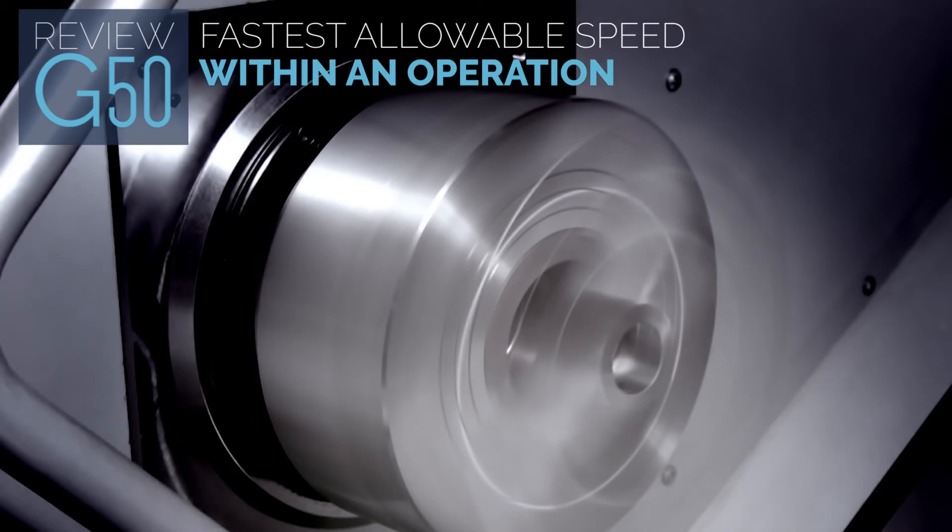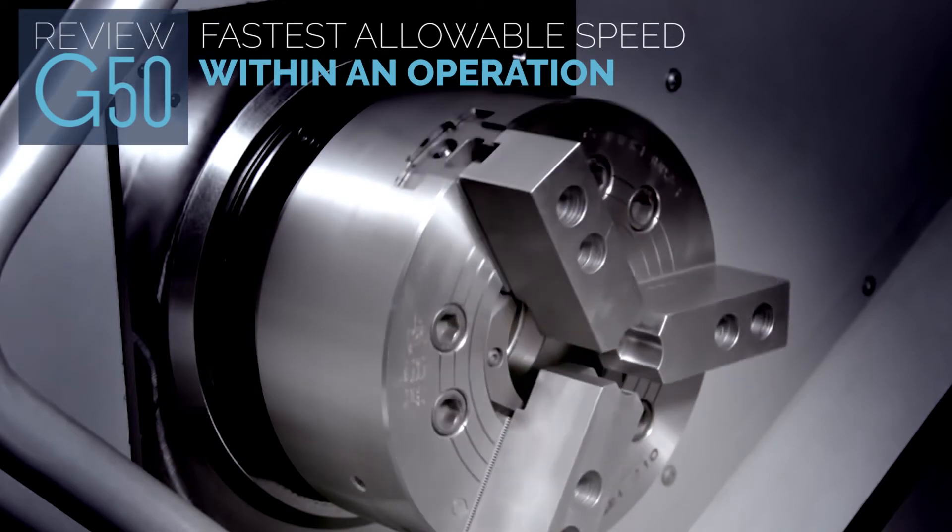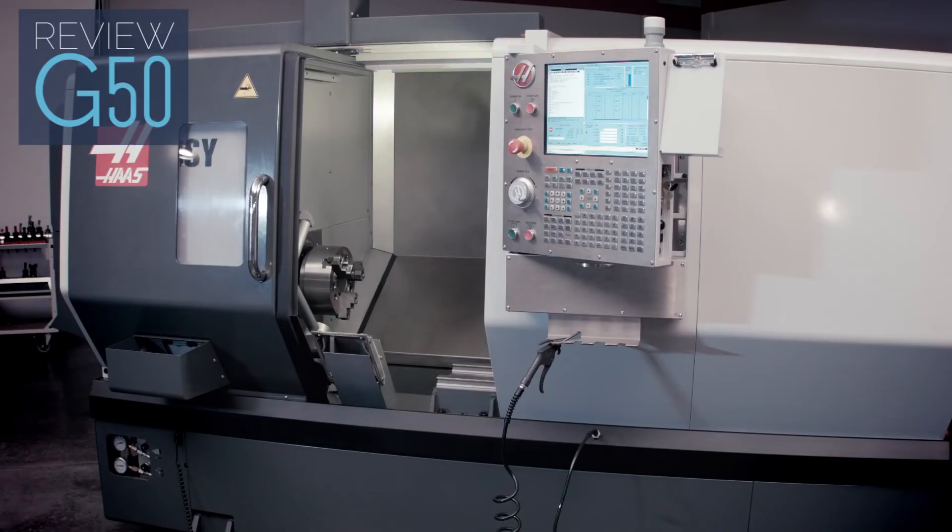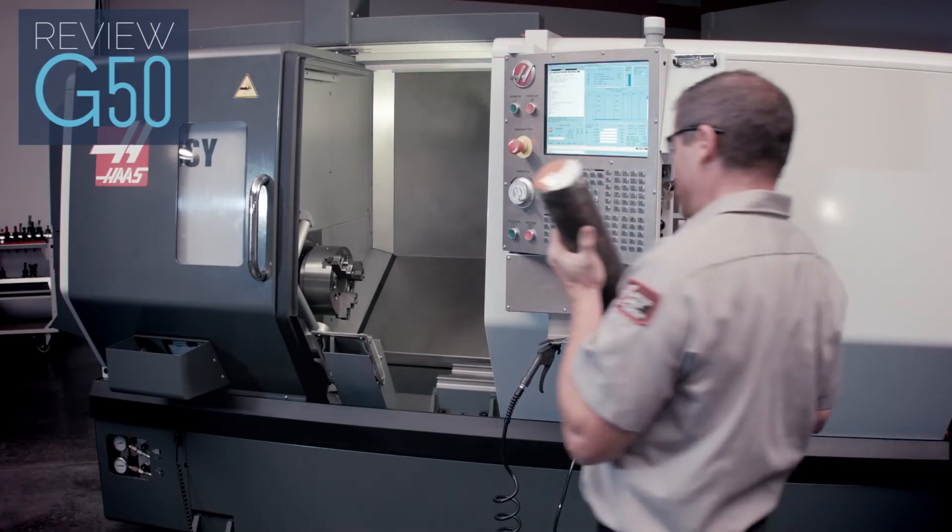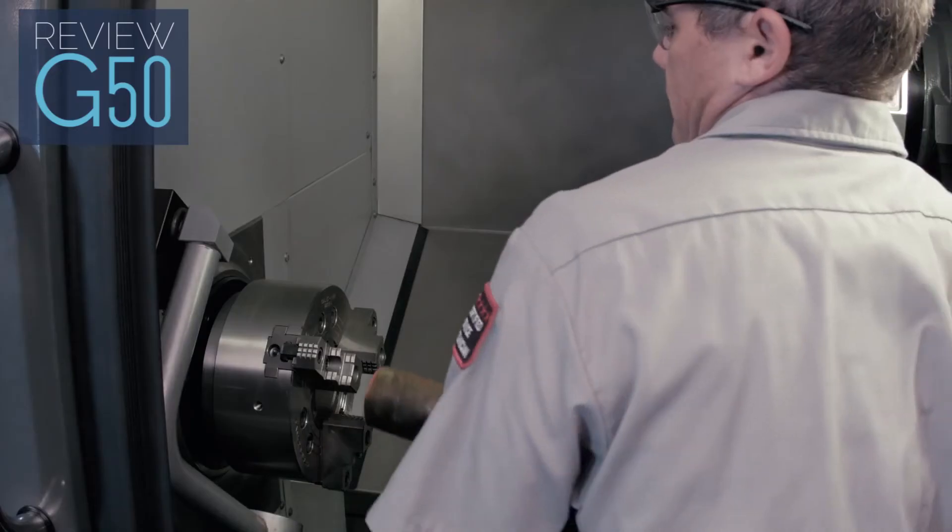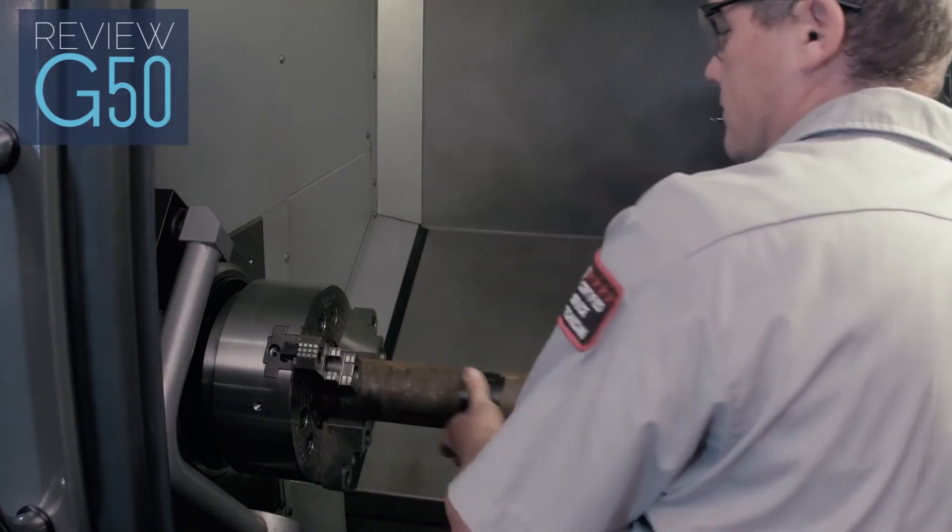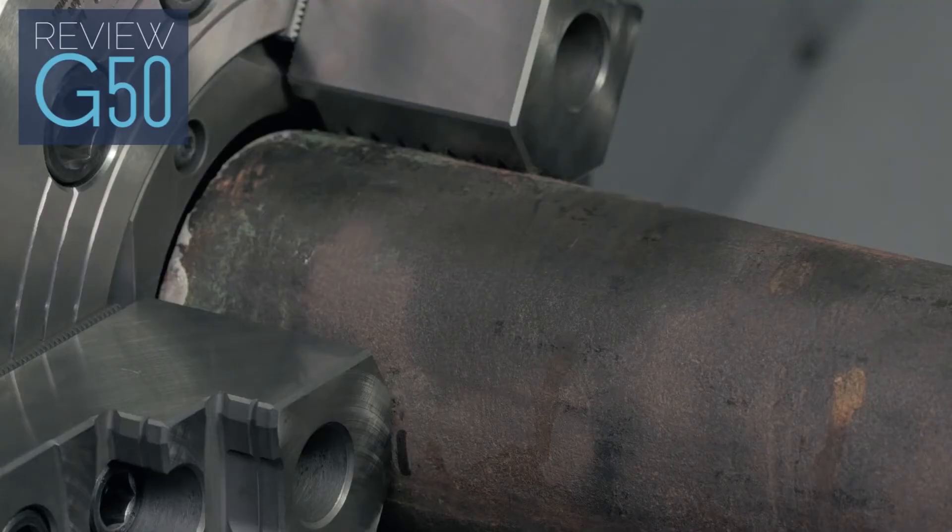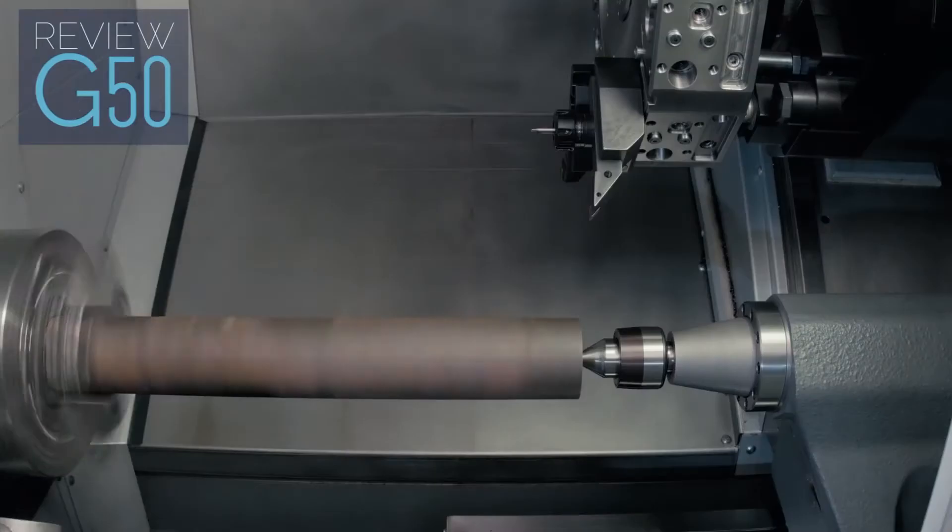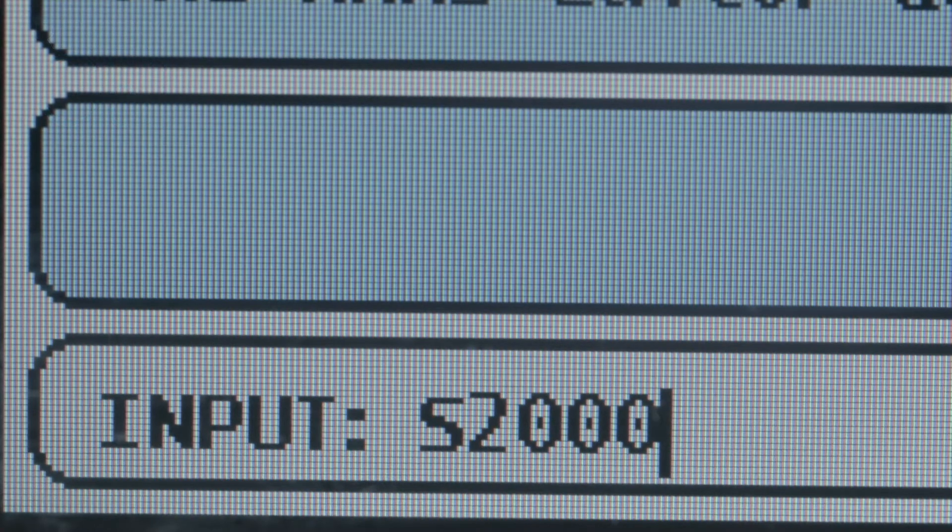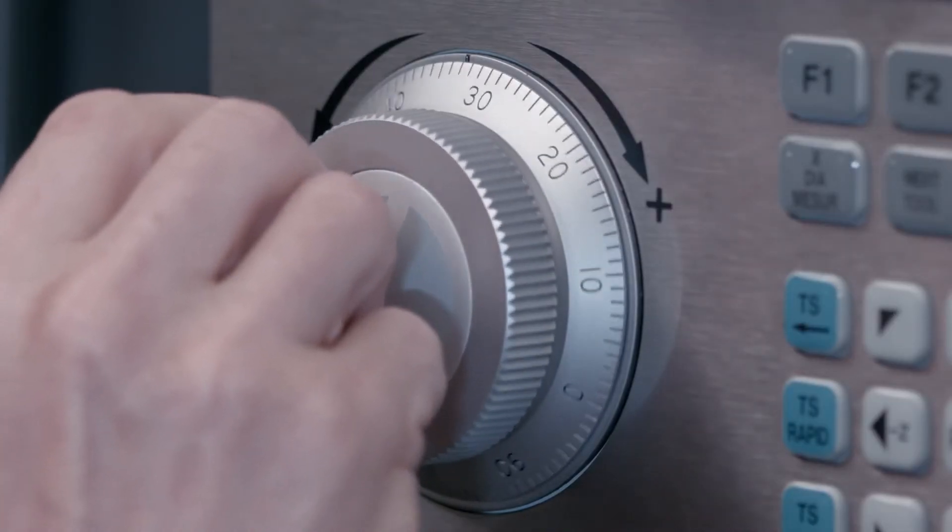When used in conjunction with G96, G50 sets the fastest allowable speed within a programmed operation. The spindle can't go any faster under any circumstances. G50 provides a failsafe, and it's wise to include it in your programs. Say we're turning a heavier part, and we're concerned about high RPM reducing chuck grip force and potentially throwing the part. And we're not comfortable going any faster than 2000 RPM with this setup. So all we would do is set our G50 to 2000 RPM.